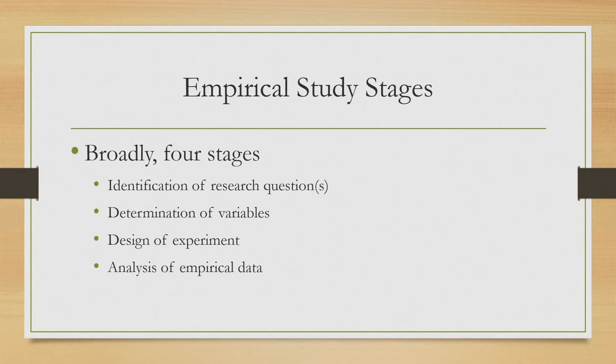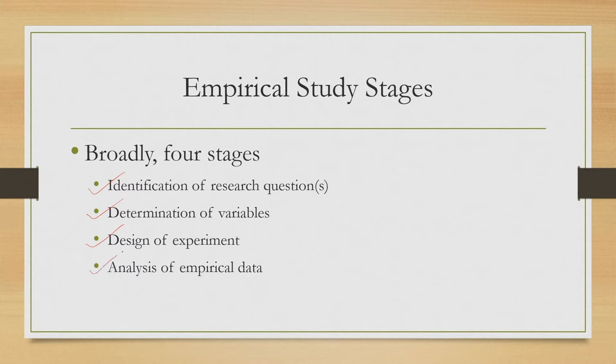We have already covered several lectures on empirical study, and the basic ideas have been discussed. The study is a systematic way of ascertaining usability of a product, and it comprises four stages: first, identification of the research question; second, determination of variables; third, design of experiment; and fourth, analysis of observed or empirical data.